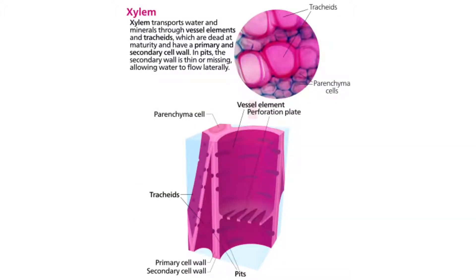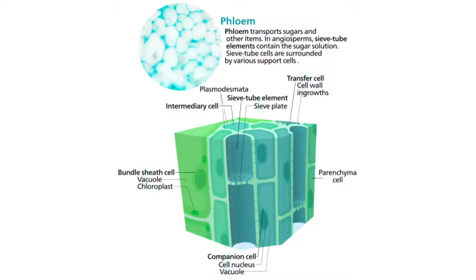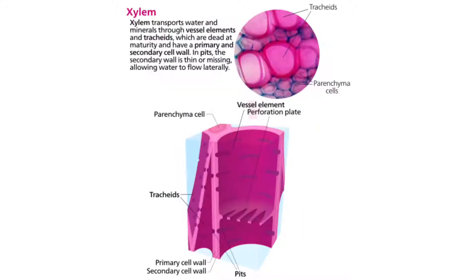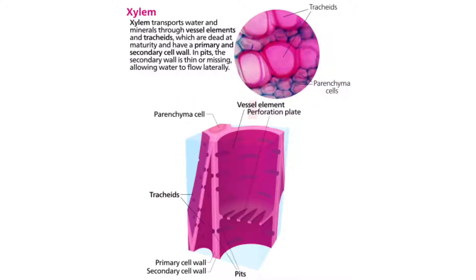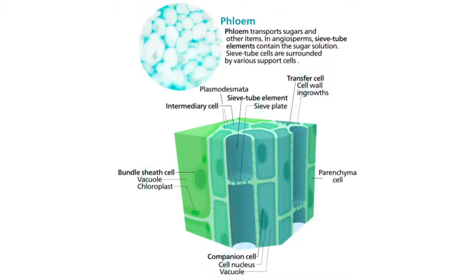Tube-shaped tissues called xylem and phloem connect the two systems. Xylem and phloem are vascular tissues because they serve as canals for transporting materials through a plant. Xylem transports water and minerals, while phloem transports sugar.